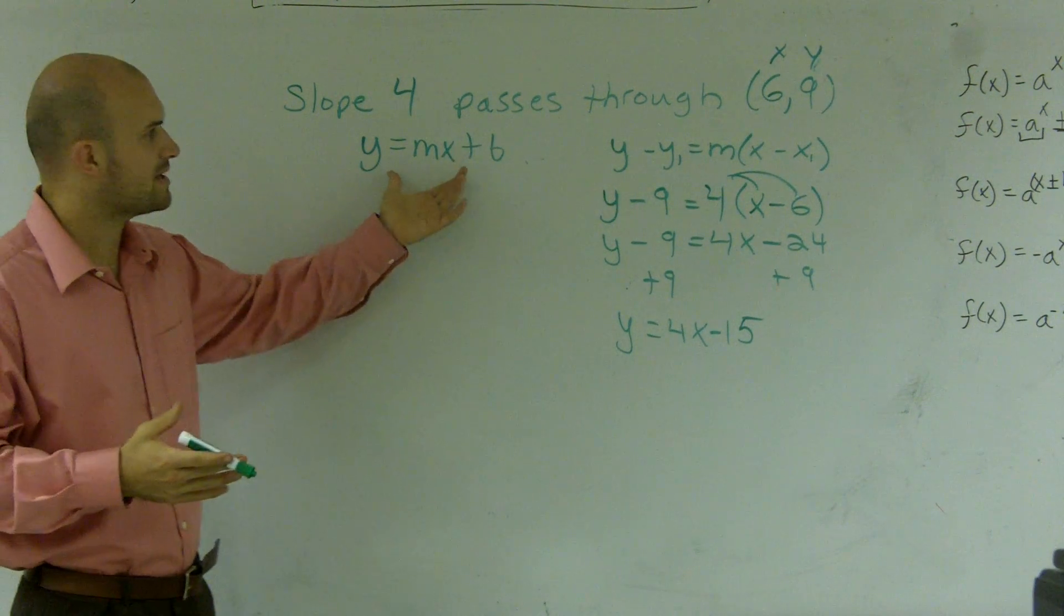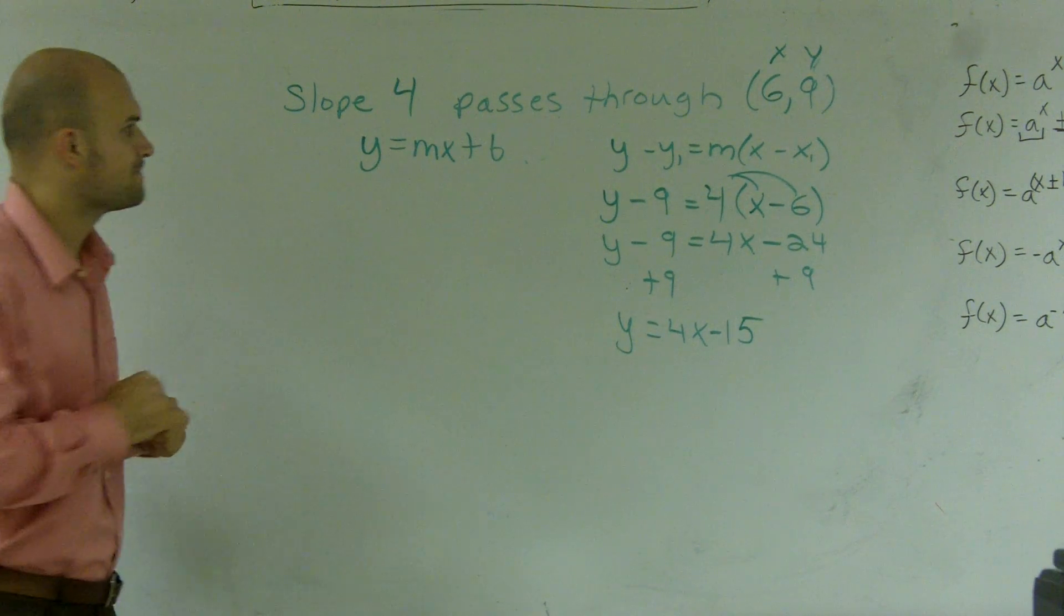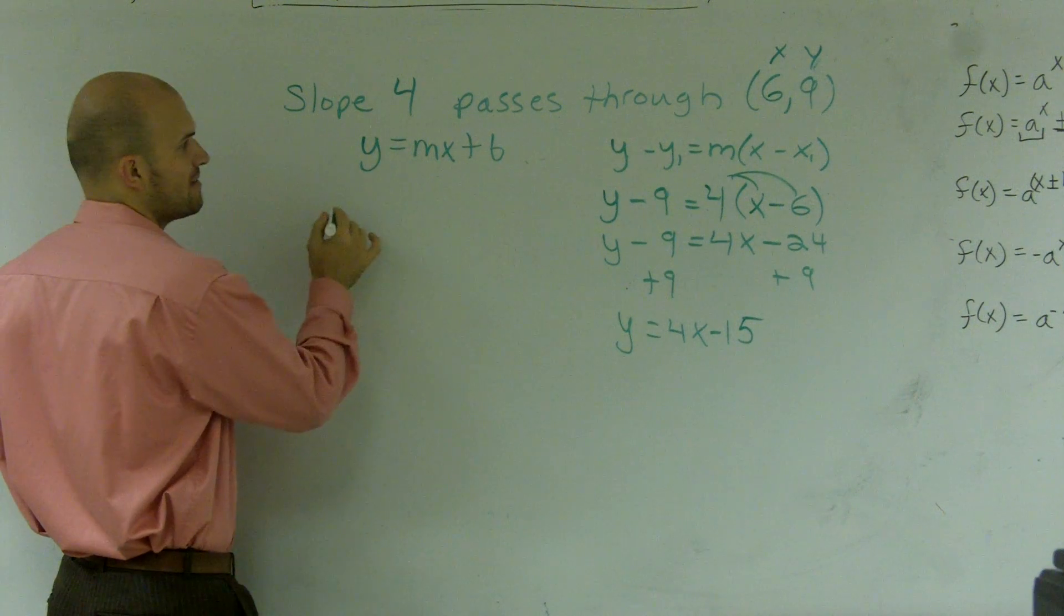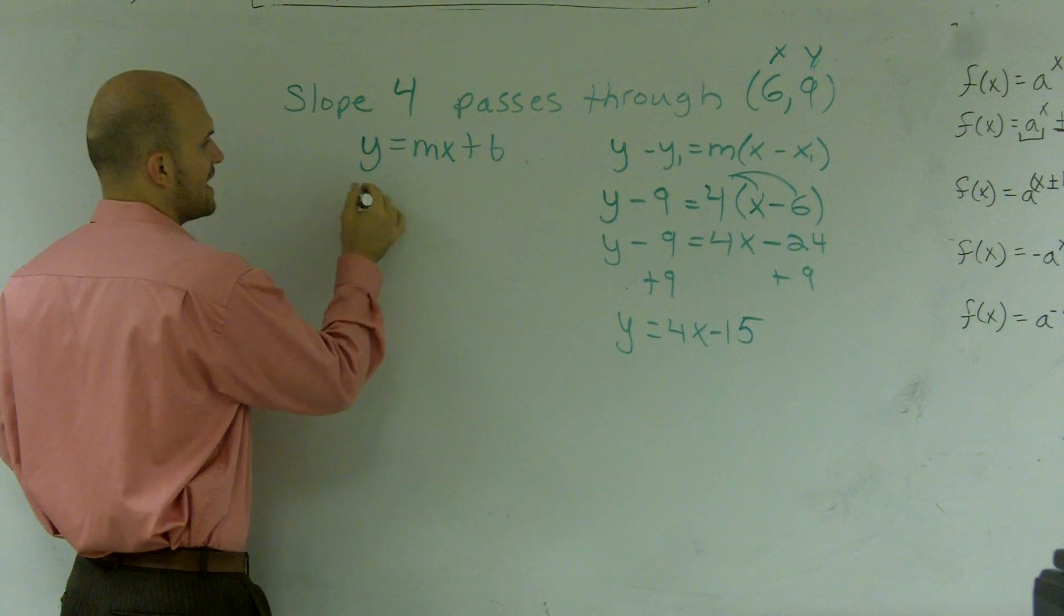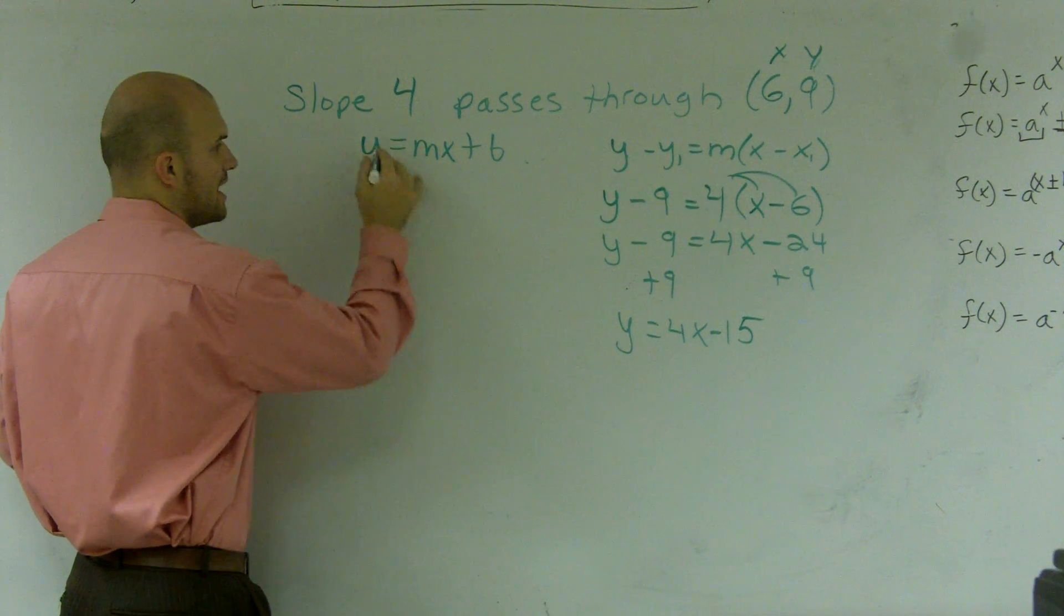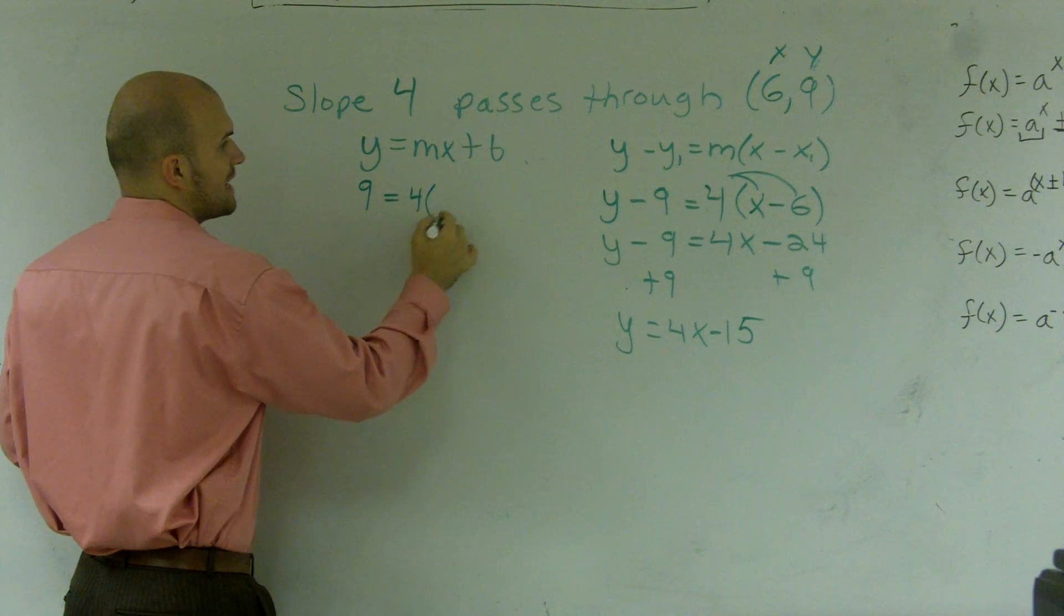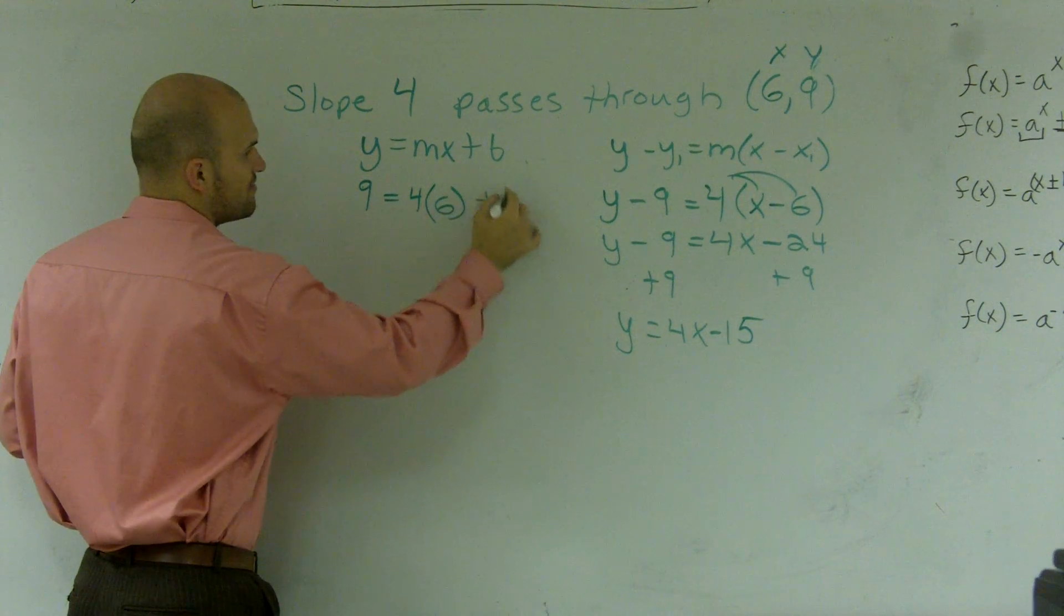So if I'm going to do it using the slope-intercept equation, I would just plug in my x and my y. So my y would be 9 equals m, which is 4, times my x, which is 6, plus b.